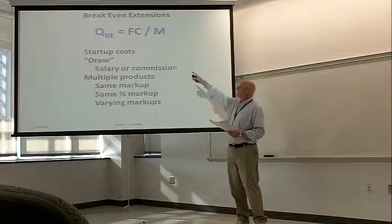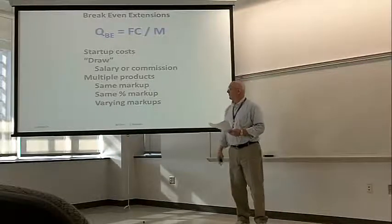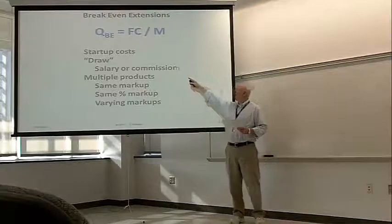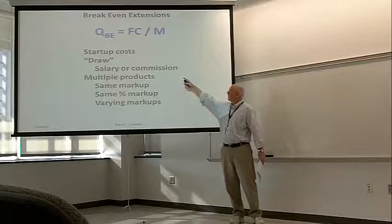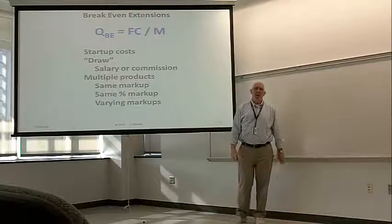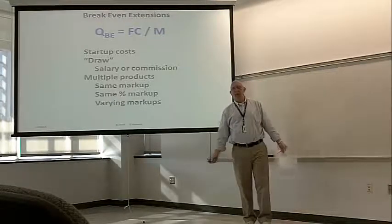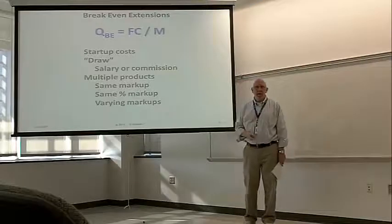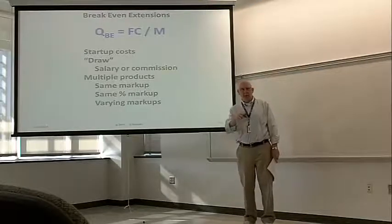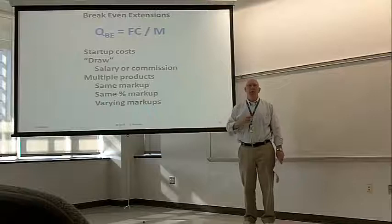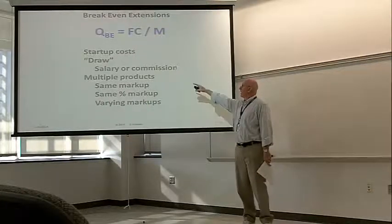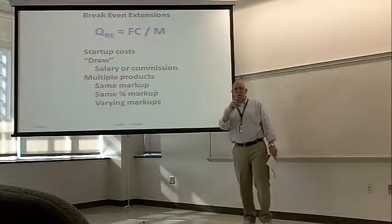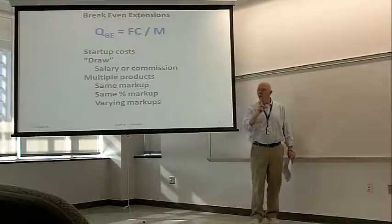You can take it as salary, as our bag break-even example did. Or you can take it as a commission. You take it as a salary. You add it on to the fixed cost. You want to take it as a commission, so much for each one you sell, that it's going to factor into that margin. Instead of margin being selling price minus variable cost, it'll be selling price minus variable cost, minus some amount that the owner's going to pull out for each one you sell.